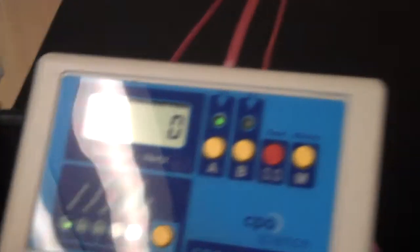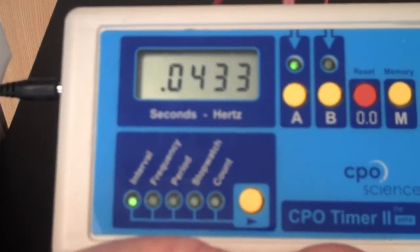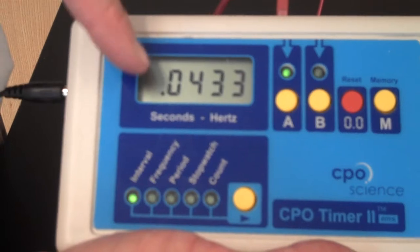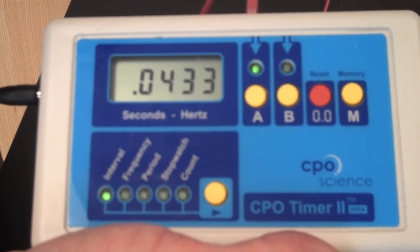Now I'm simply going to let the car go, and as the car goes through the photo gate, it will time the time that it passed the photo gate. And this time is 0.0433.